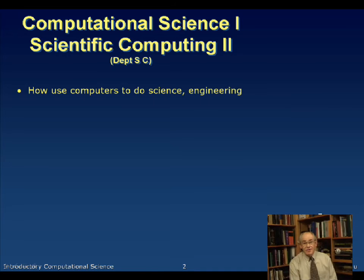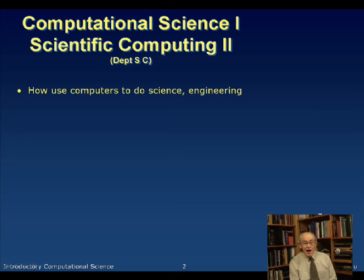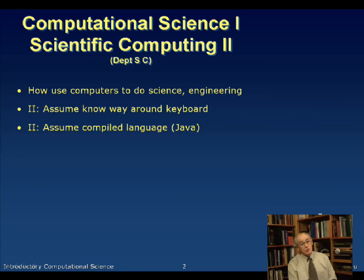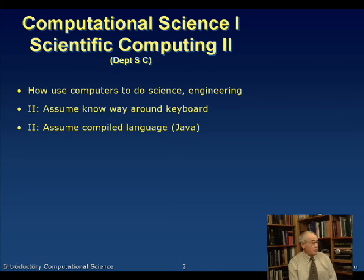This is our Department of Shameless Commerce slide — you won't see this too often again. But what is this class about? Computational Science is really about how to use computers to do science or engineering, how to solve problems with computers. That's what we try to teach. It's the second course because we assume you know your way around the keyboard. We assume you know a little bit about operating systems, about shells, about running software. We also assume you've learned how to run compiled languages. This course is predominantly focused on using Java, though other compiled languages are okay.